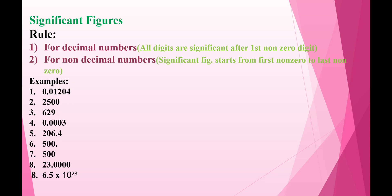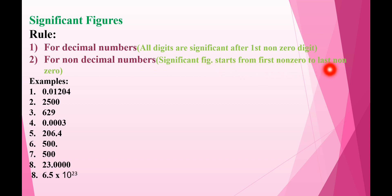Hello students, today I have brought a simple trick to count significant figures without memorizing the rules. There are so many rules given in our textbook and it is a little difficult to remember all of them. You only need to remember two rules: for decimal numbers, all digits are significant after the first nonzero digit; for non-decimal numbers, significant figures start from the first nonzero to the last nonzero digit.